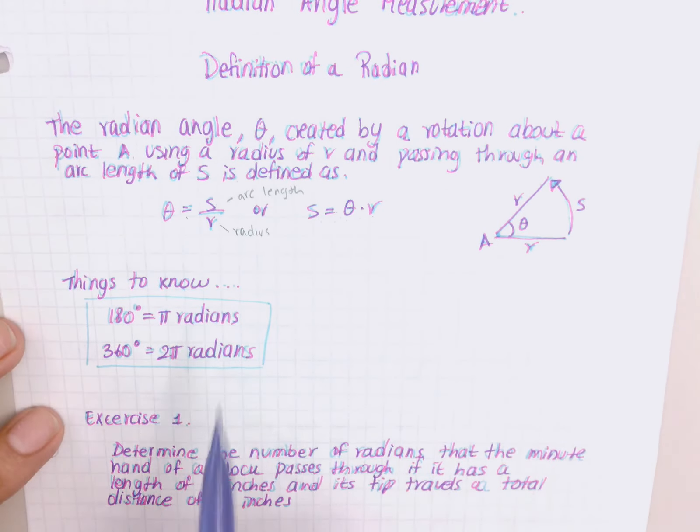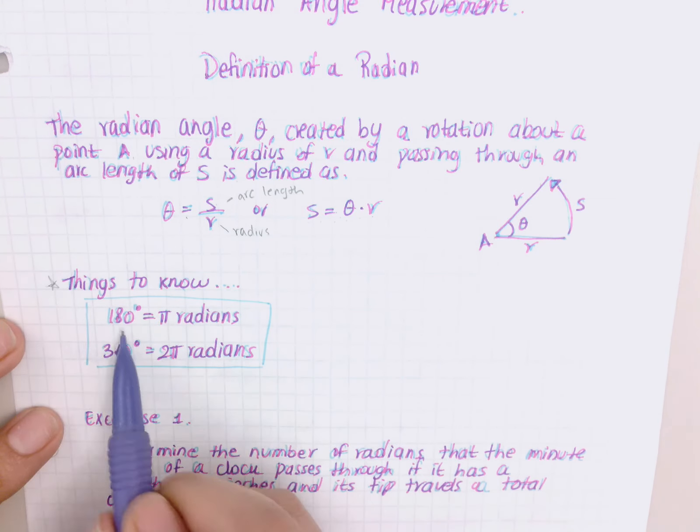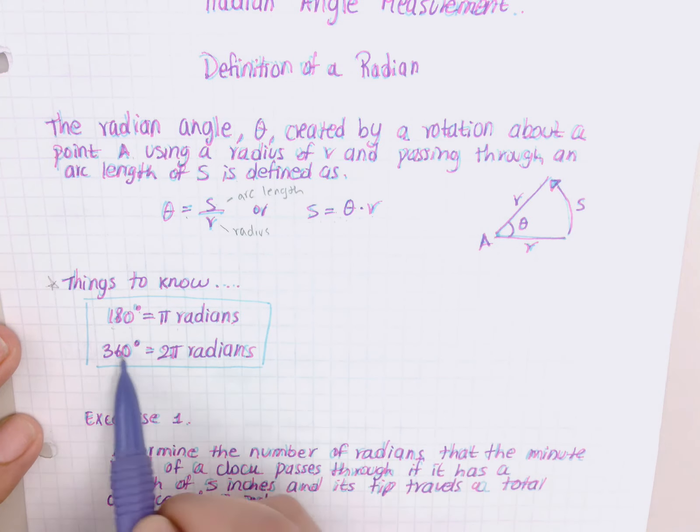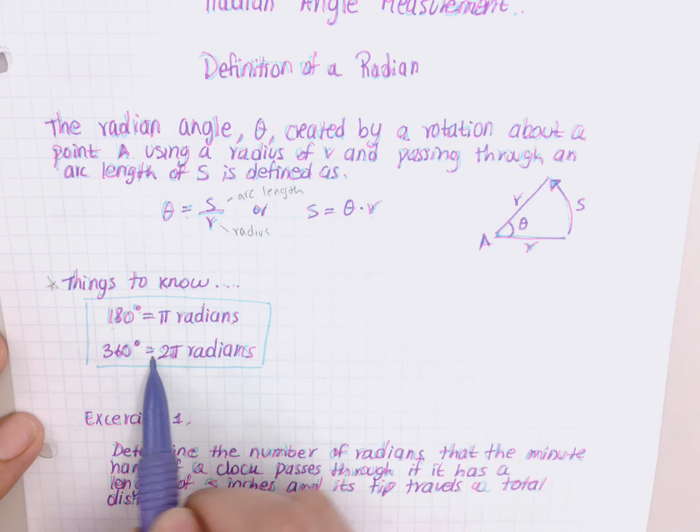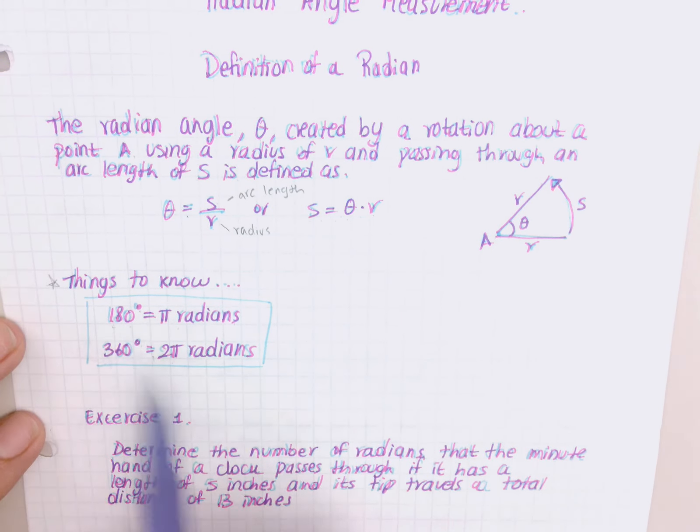Now, because this should have been done in geometry, I'm just going to remind you a few things. 180 degrees is the same thing as π radians. Likewise, 360 degrees is the same thing as 2π radians, as double 180.